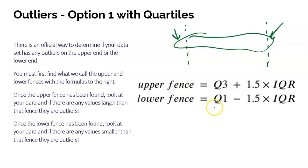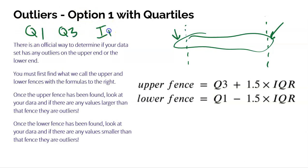To find the fences, it's so easy. All you need are your quartiles — quartile one and quartile three. We also need the IQR, but remember the IQR is just Q3 minus Q1. Hopefully you've watched other videos so you know what the quartiles are.